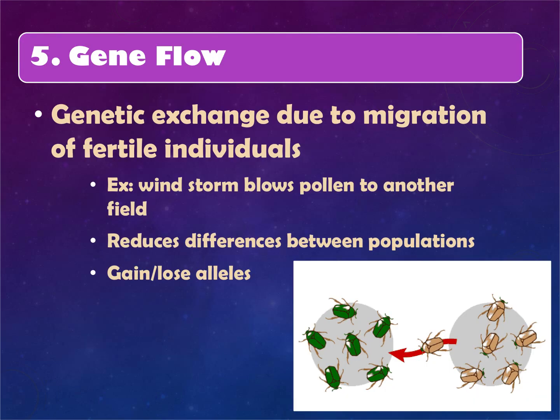Gene flow is due to migration, emigration, and movement in and out of a population. When a brown beetle moves into a green beetle habitat, you get a different gene combination and trait introduced. An example is a windstorm blowing pollen to another field. This has nothing to do with natural selection but can gain, lose, or change the allele composition of the population.